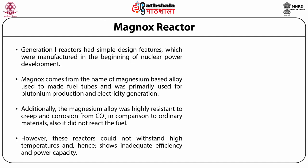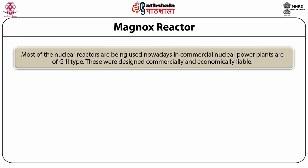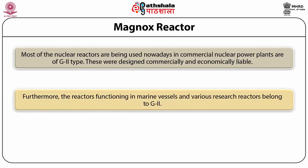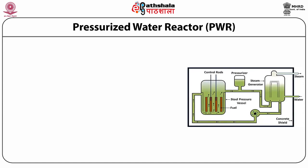We will now discuss Generation 2 (G2) reactors. Most of the nuclear reactors being used nowadays in commercial nuclear power plants are of G2 type. These were designed to be commercially and economically viable. Furthermore, the reactors functioning in marine vessels and various research reactors belong to G2. The reactors of the G2 category are developed with improved design and safety features in comparison to Generation 1 reactors. The first type is the pressurized water reactor (PWR).